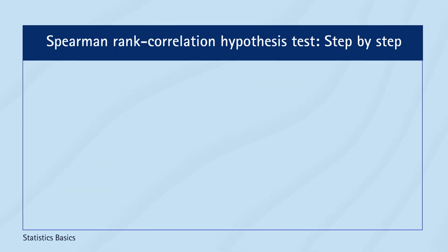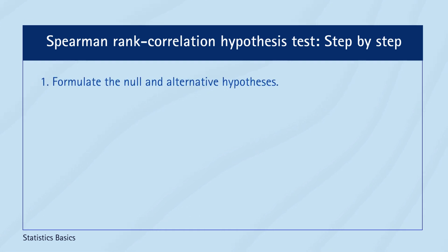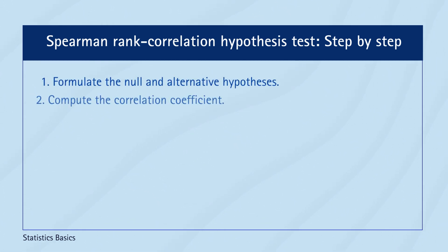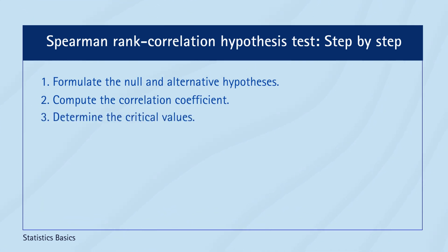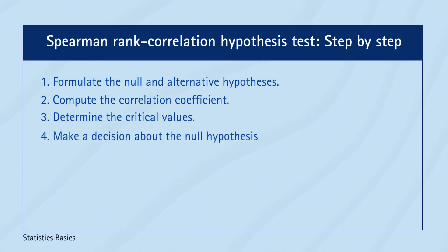Next, we will conduct a hypothesis test using a five-step procedure: formulating null and alternative hypotheses, calculating the test statistic, determining the critical value from Spearman's Rank Correlation Coefficient table, comparing the calculated coefficient to the critical value, and finally drawing a conclusion based on the decision.